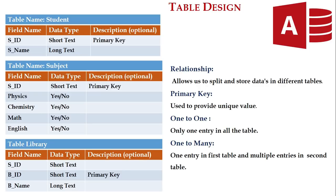So what is a one-to-one relationship? There will be only one entry in all the tables. One-to-many means there will be one entry in the first table and multiple entries in the second table. These are the key concepts you should understand before proceeding.